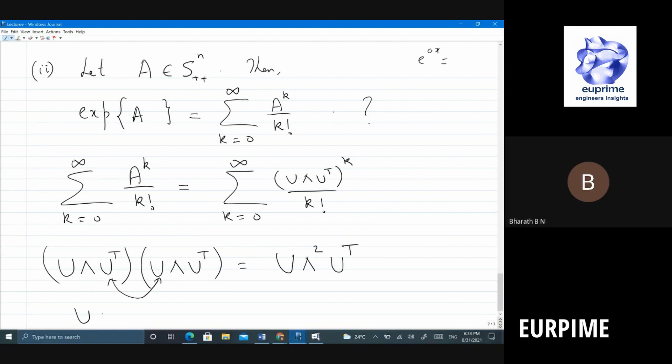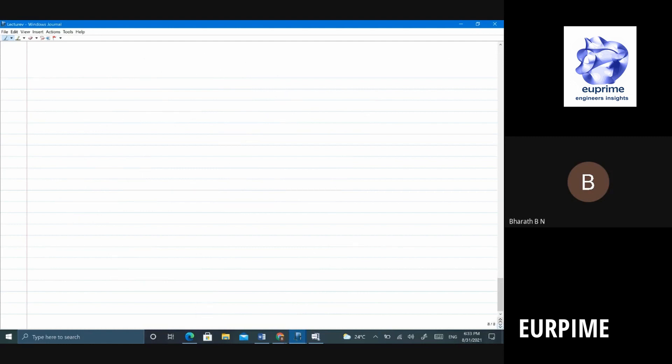What happens if you take A and multiply it by k, k times? U lambda per k U transpose. This is clear. So let us substitute it here. So then the above sum becomes infinity U lambda per k over k factorial U transpose. You agree? I can write this as U, I can pull the U out of the whole thing, it is independent of k equal to 0 to infinity lambda per k over k factorial times U transpose.